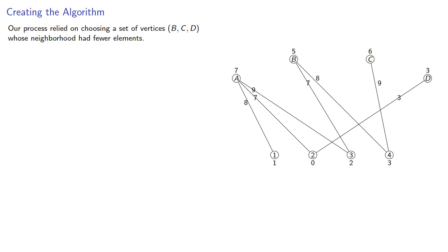Now, our process relied on choosing a set of vertices B, C, and D whose neighborhood had fewer elements. But we could have chosen a different set of vertices. So this is a heuristic solution to the general assignment problem. In particular, it requires us to make an arbitrary choice.